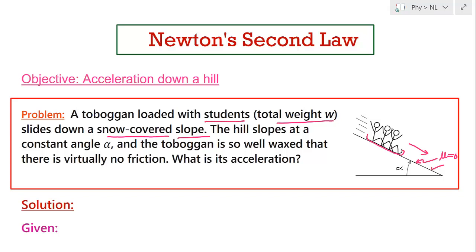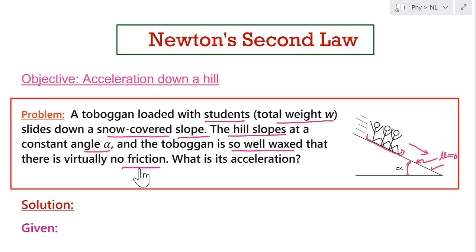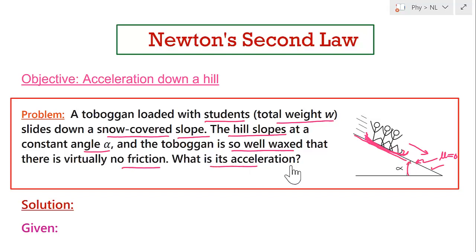The problem further says the hill slopes at a constant angle alpha. The toboggan is so well-waxed that there is virtually no friction. So this is a snow surface and the toboggan is waxed, so we can assume there is no friction acting between the toboggan and the inclined surface — that is smooth sliding. The question asks: what is the acceleration of this toboggan?